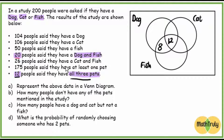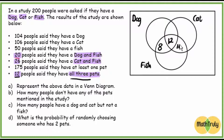Next, 26 people say they have a cat and fish — that's the full cat-and-fish intersection. To find cat and fish only, we say 26 minus 12, and that gives us 14 people who have a cat and a fish only.